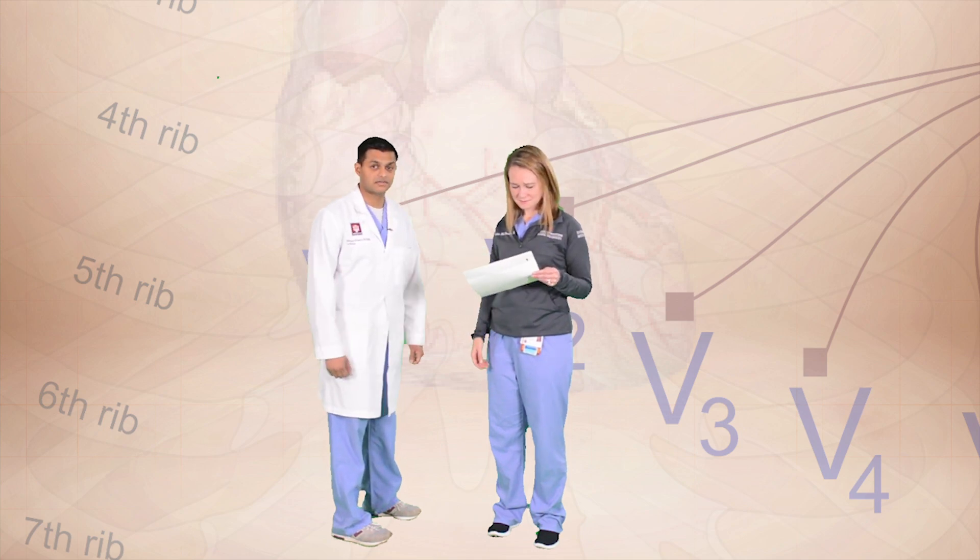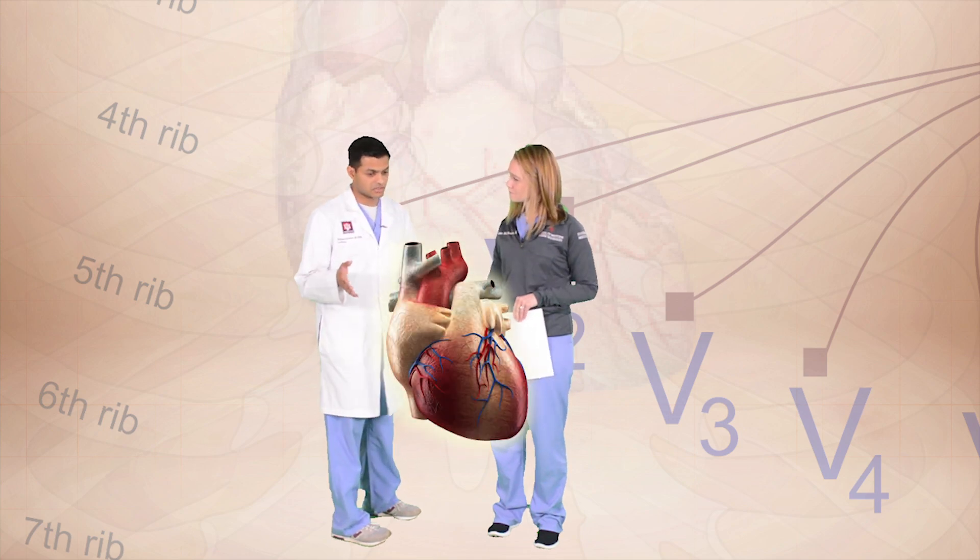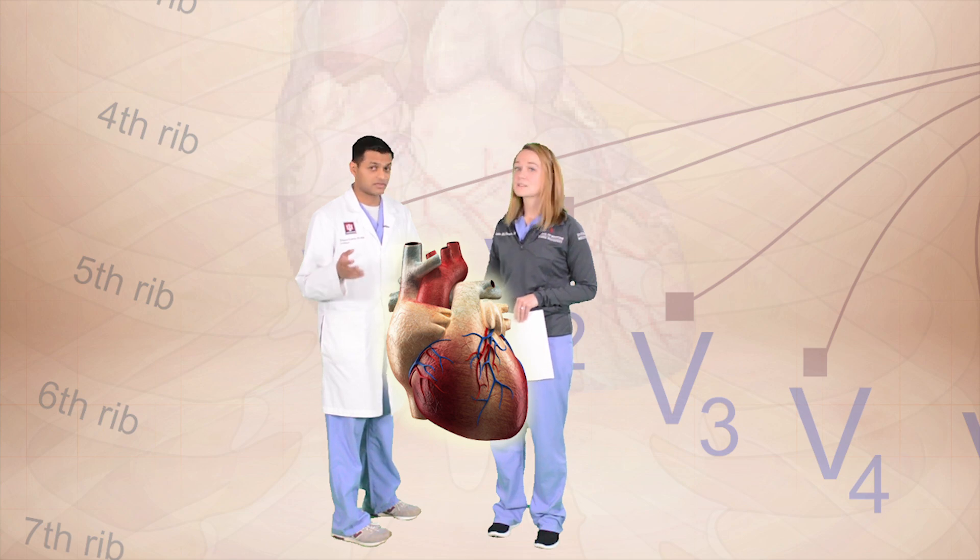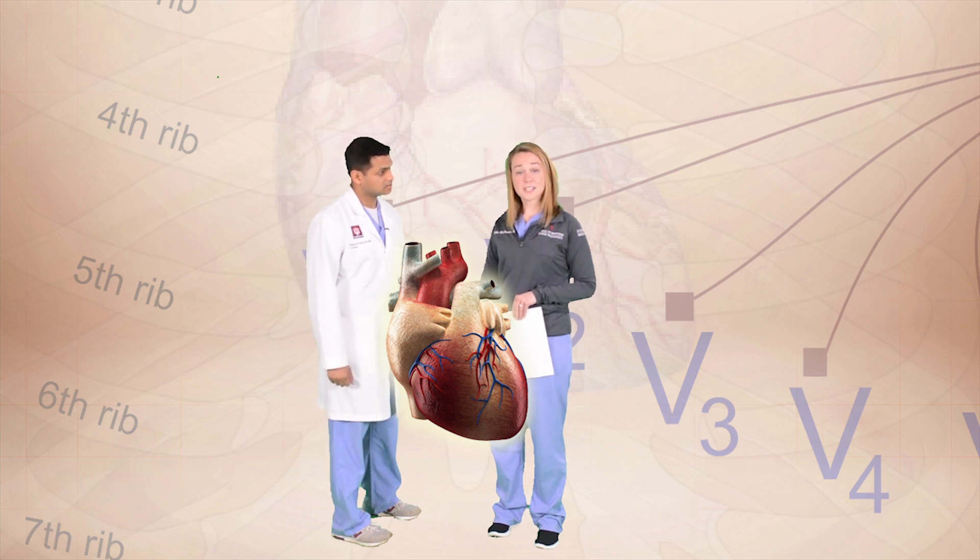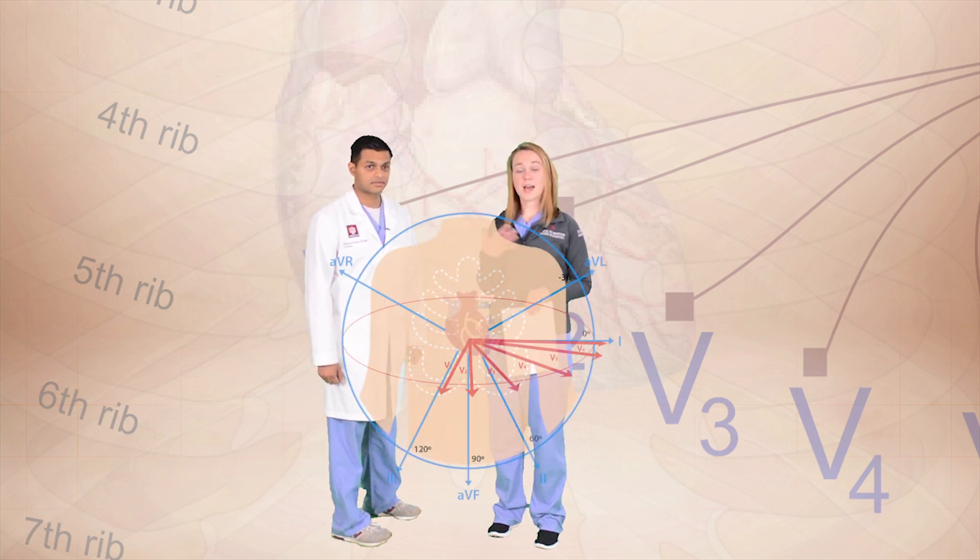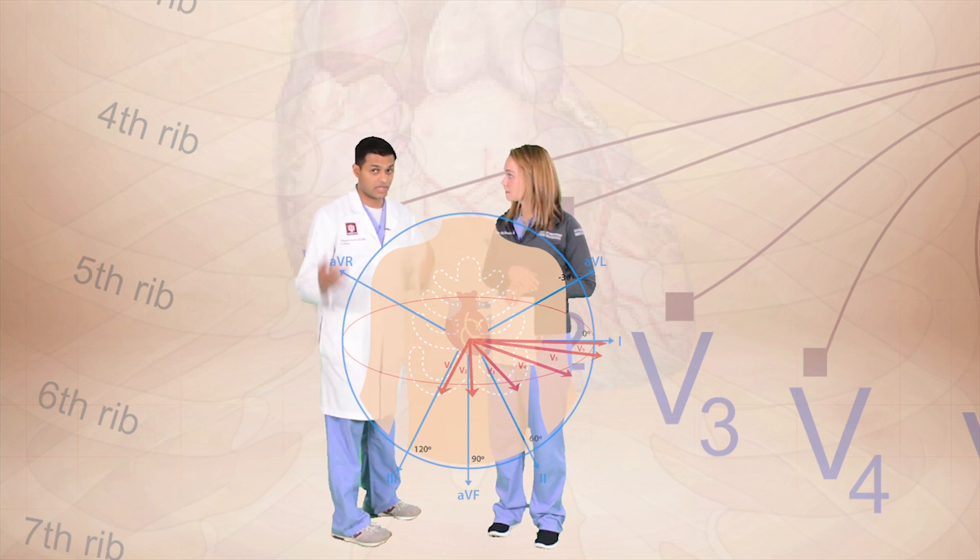You know, that's a great question. So we're looking at a three-dimensional structure in 2D. And so the EKG represents a single snapshot of the heart's electrical rhythm from 12 different angles. Oh, so it's like a chest x-ray when we look at the lateral and the frontal plane. If we look at one view, we might miss something. You got it. Exactly right.